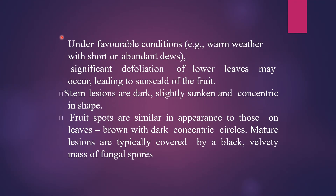Under favorable conditions like warm weather with short or abundant dew, significant defoliation of the lower leaves may occur, leading to sun scald of the fruit. Stem lesions are dark, slightly sunken, and concentric in shape. Fruit spots are similar in appearance to those on leaves — brown with dark concentric circles. Mature lesions are typically covered by a black velvety mass of fungal spores.